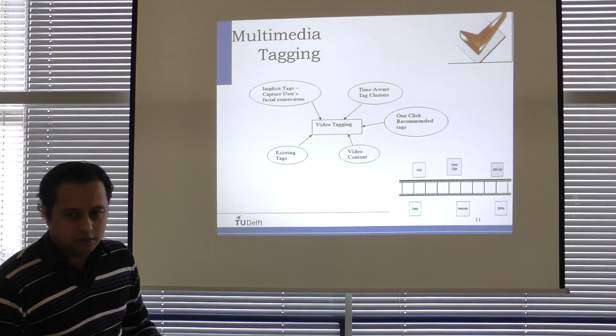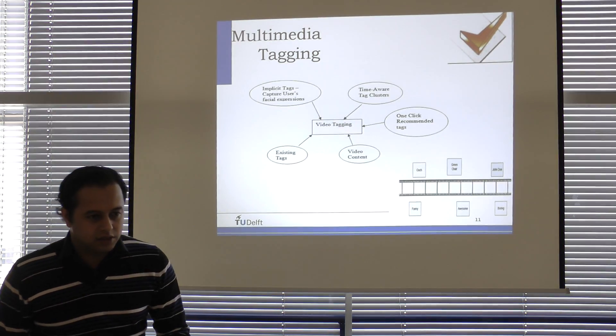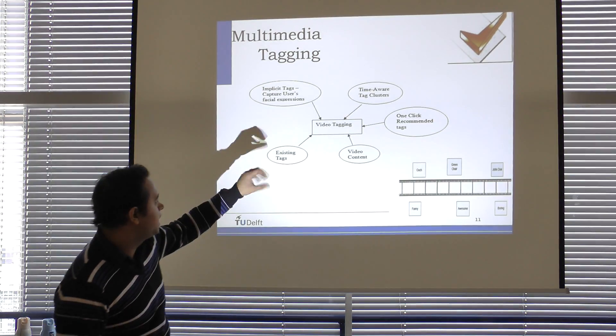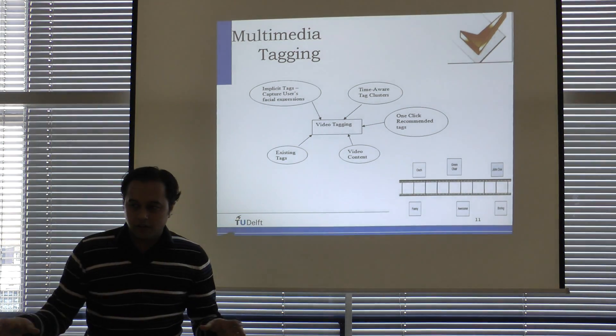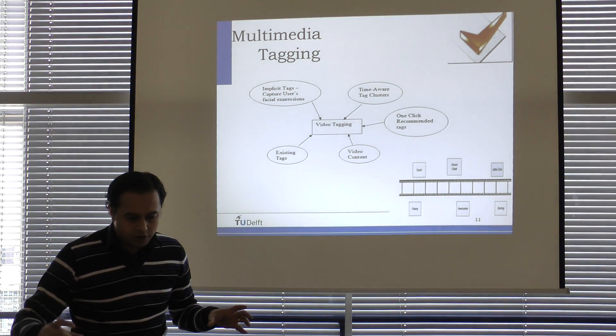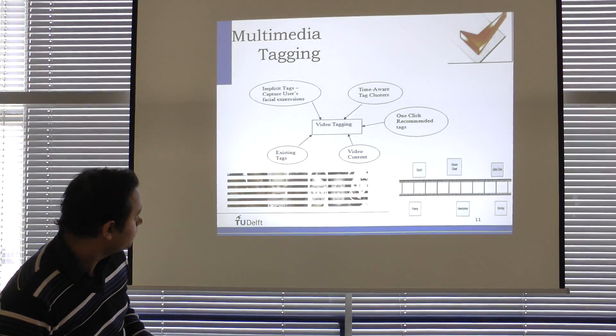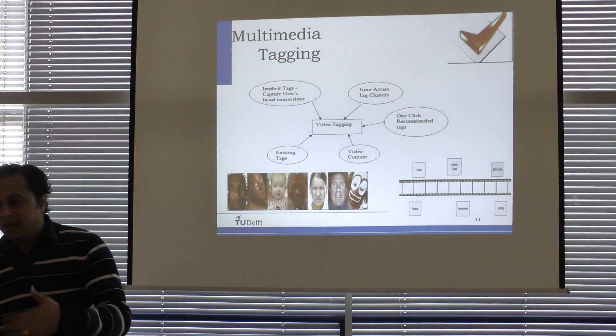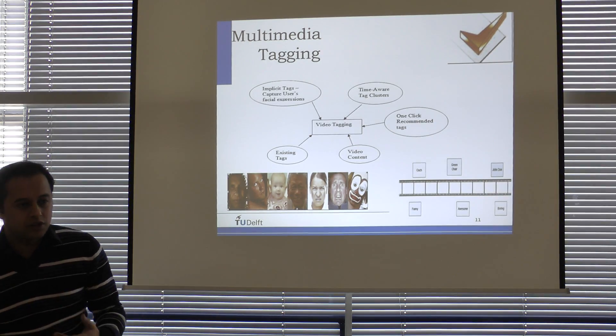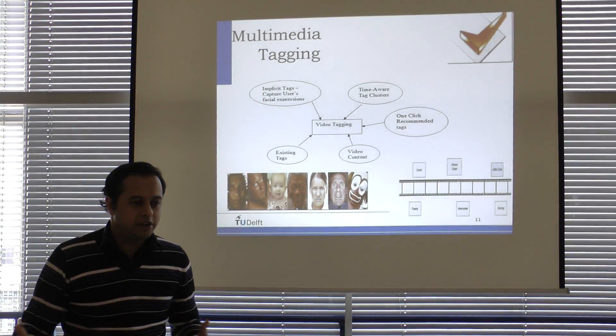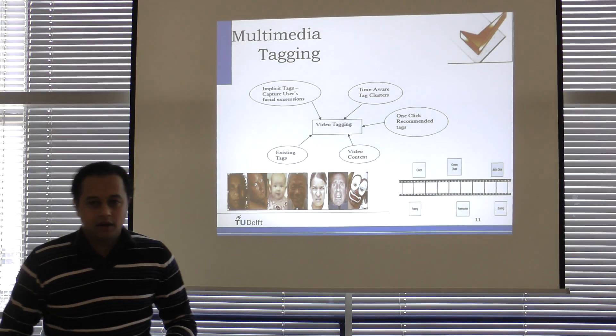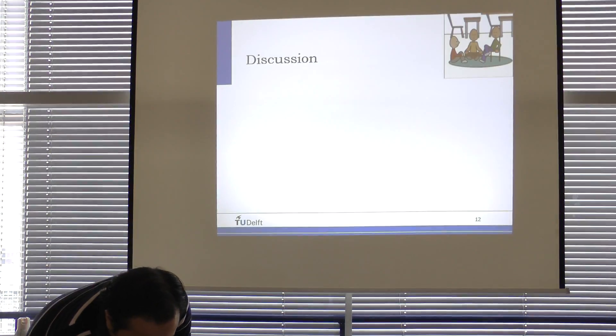Context-aware tag clusters, I think the main idea is that you are aware of the context of the user, so you will offer tags, depending on what the user is doing at that point of time. Implicit tags, it is basically, you try to basically read the user's expressions, and suggest if he is sad, you know, automatically put it sad.